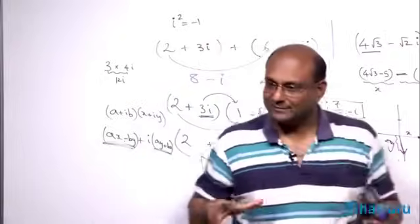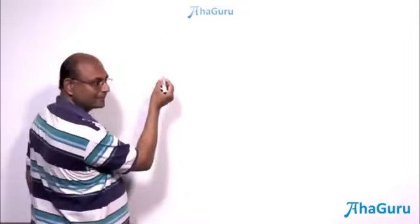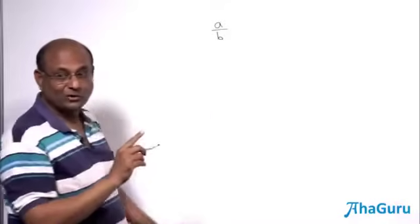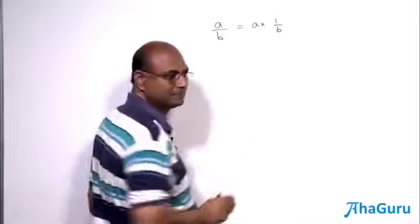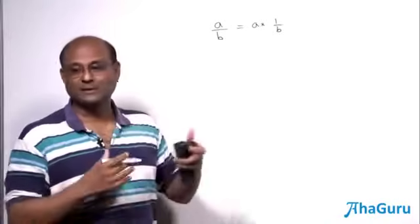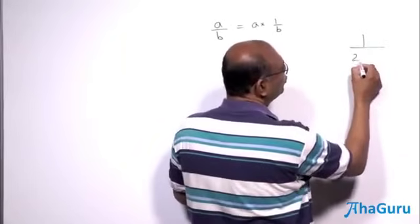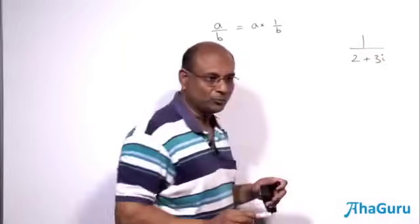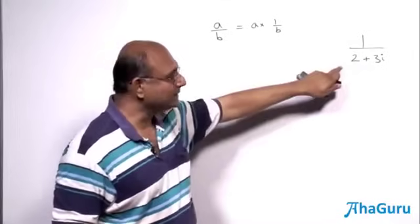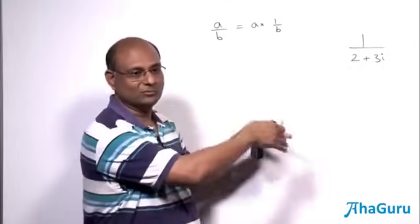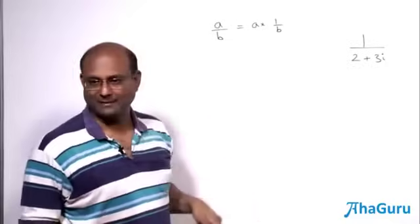The only other thing we need to focus on is division. To divide a by b, we need to know what to do with 1/b, because a divided by b is just a times 1/b. When I have a complex number in the denominator, the problem is what to do since two numbers sit there. So let us think about 1 divided by (2 plus 3i) first, and then look at a fuller example.